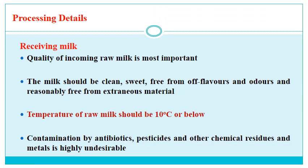The first processing step is receiving of milk. Quality of incoming raw milk is most important — the milk should be clean, sweet, free from off-flavors and odors, and reasonably free from extraneous material. Temperature of raw milk should be 10°C or below, and contamination by antibiotics, pesticides, and other chemical residues and metals is highly undesirable.